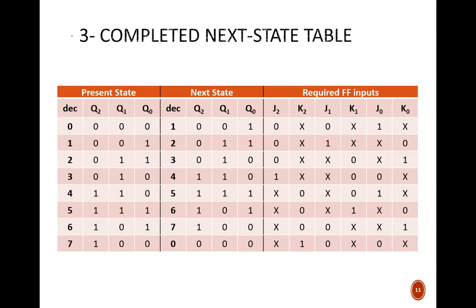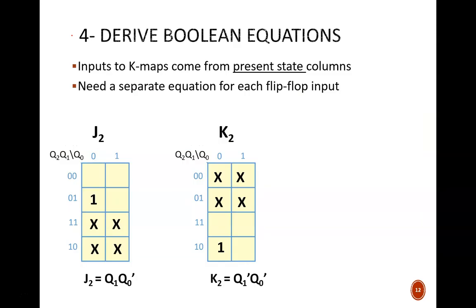After doing that, pause the video and derive the simplest boolean equation for each flip-flop input. Make sure that when deriving the equations, you use the present state columns as the inputs. If you did so correctly, you should have obtained Karnaugh maps like these for j2 and k2, and from those maps, you should have these same equations.